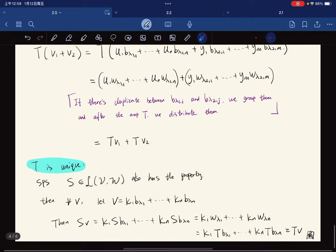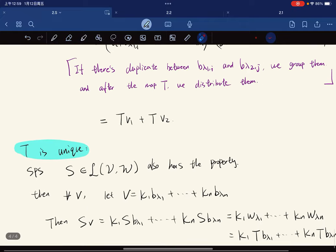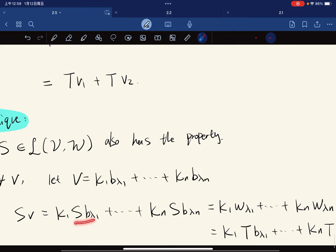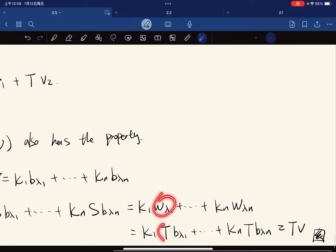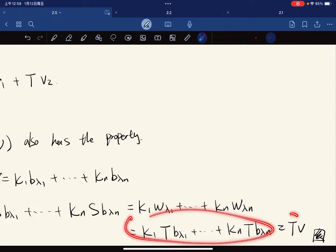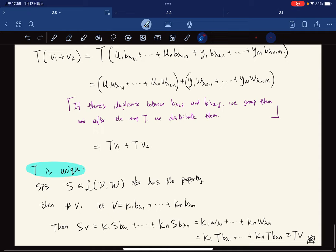We want to show that T is unique. Suppose there's another linear that has this property. Then for any V, we have a unique expression that Sv is equal to this because S is linear, and also S maps V_lambda to W_lambda. But this W_lambda is also T of V_lambda, and we use the linear property to conclude S equals T. And that's it.